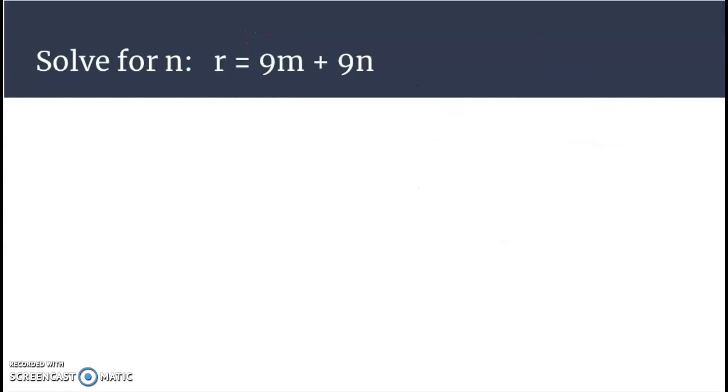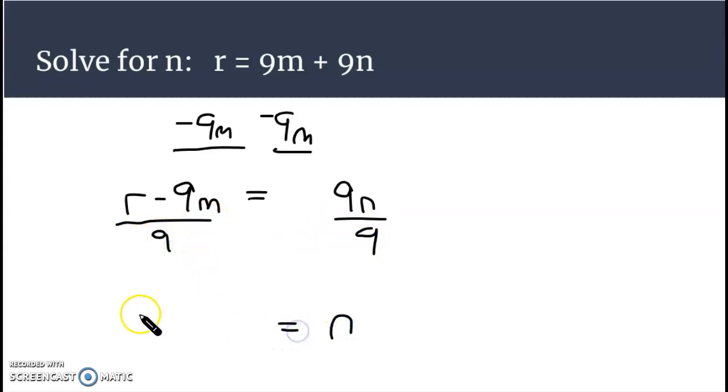Let's look at another one here. This time we're solving for n. r equals 9m minus 9n. I'm taking away 9m from both sides of the equation, so that leaves us with 9n equal to r minus 9m. We now need to divide both sides by 9, and that will leave us with n by itself, r minus 9m all over 9. That is the isolated variable.